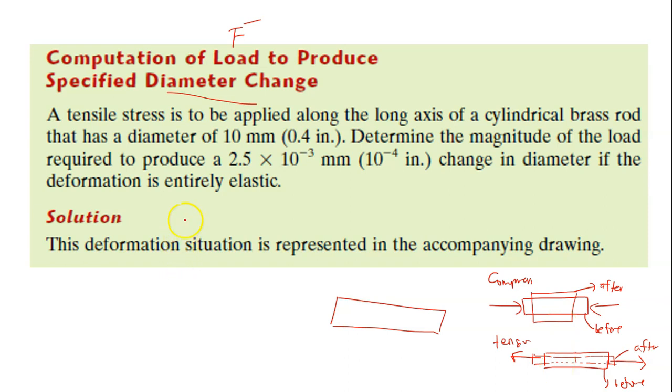The question is: a tensile stress is to be applied along the long axis of a cylindrical brass rod that has a diameter of 10 mm. This is the original diameter D0. Determine the magnitude of the load F required to produce 2.5 × 10⁻³ mm.